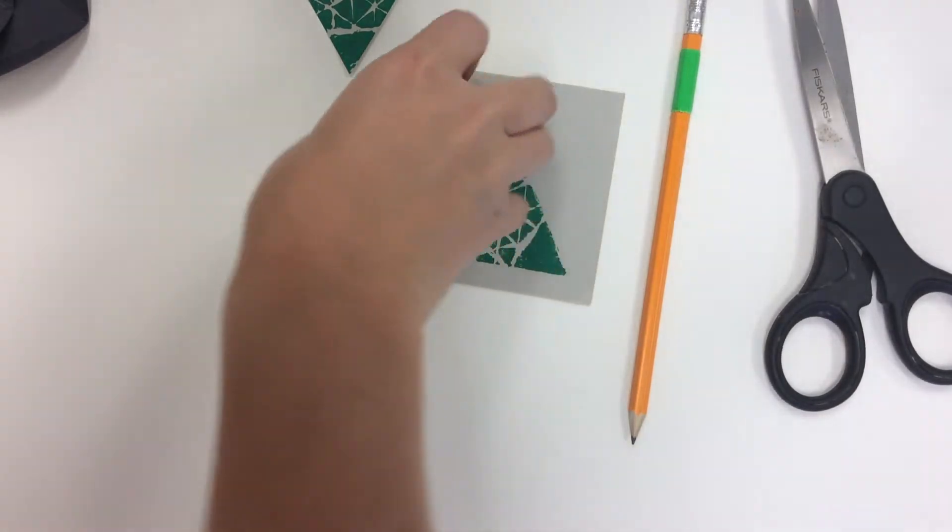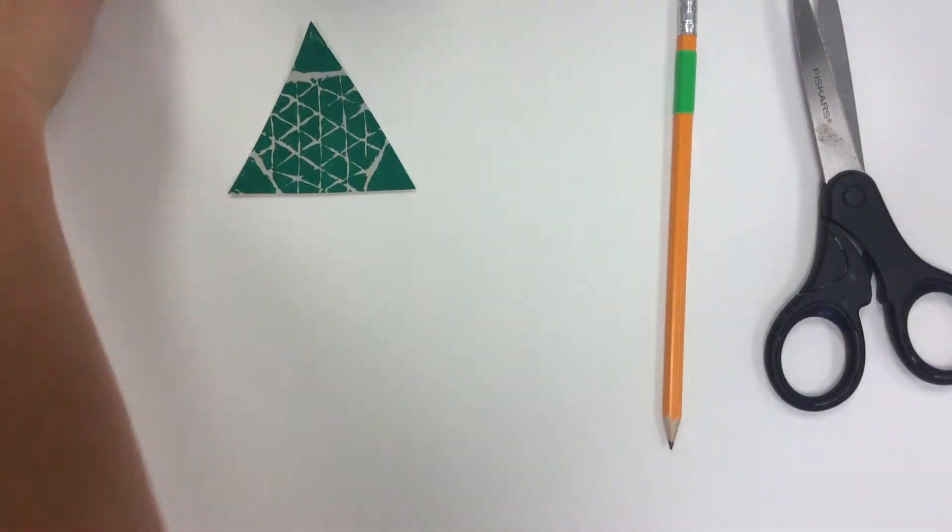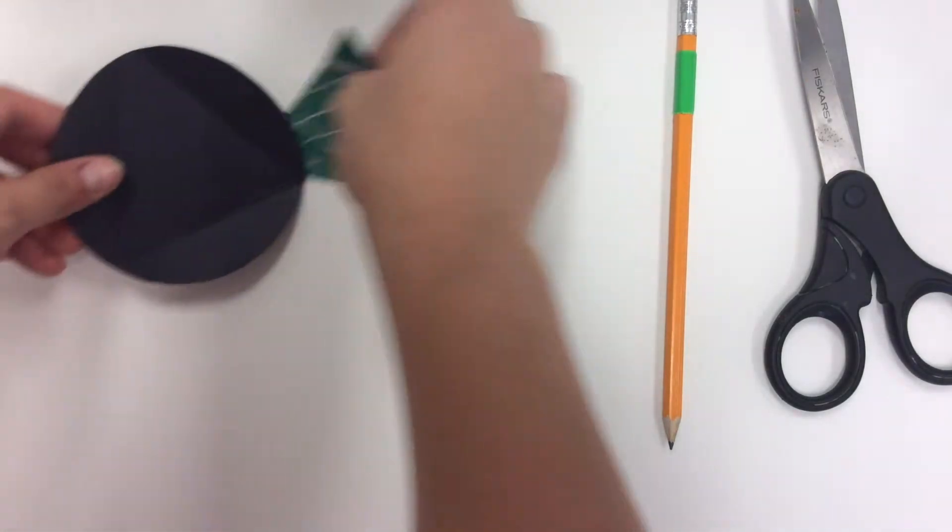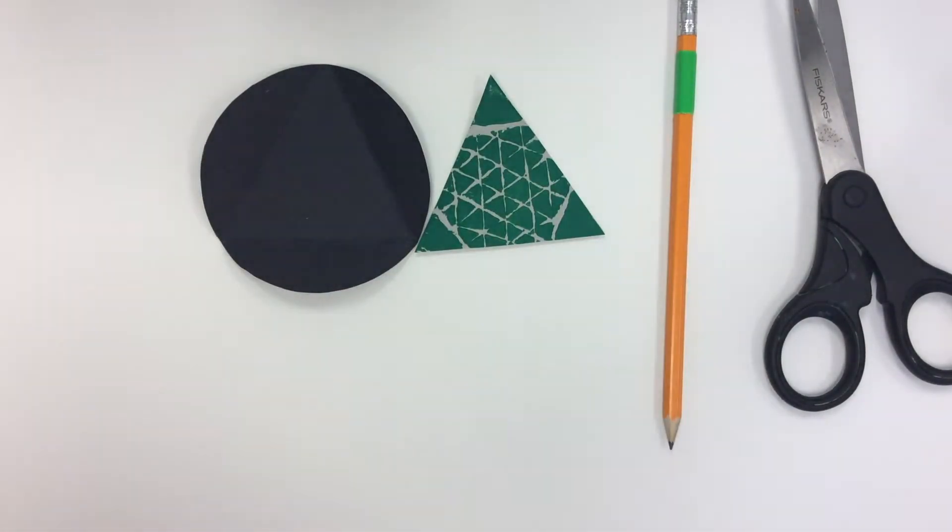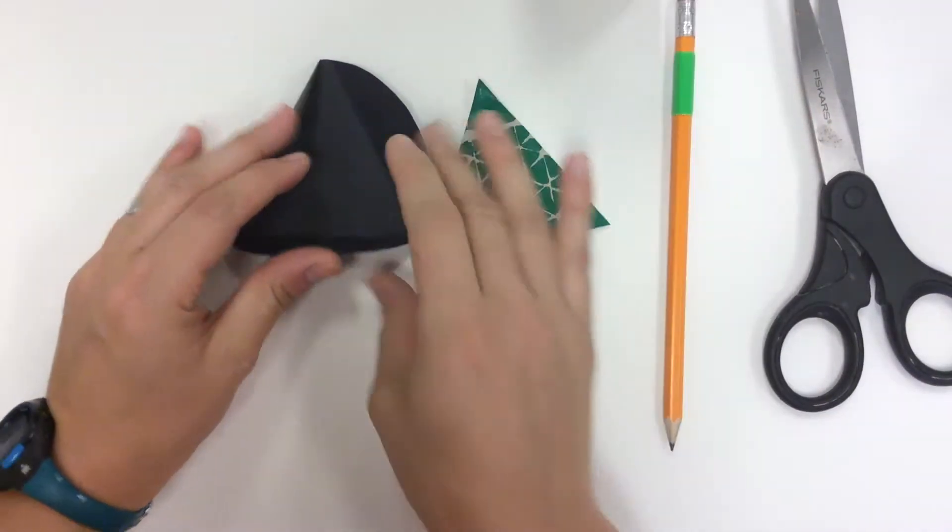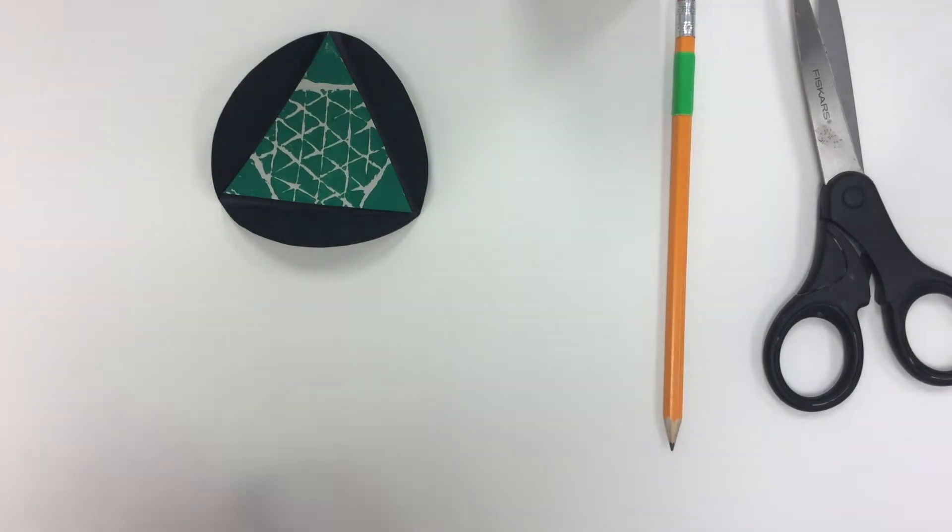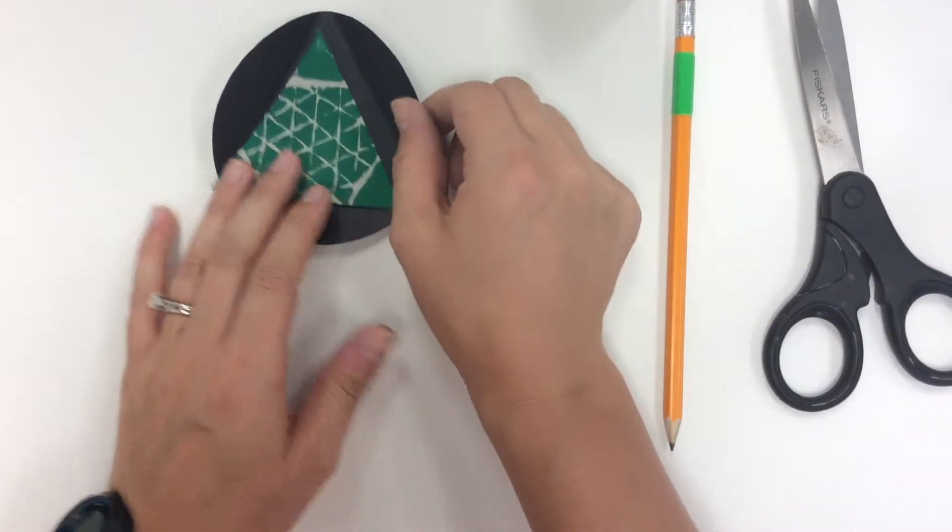Once you have your 20 best triangles cut out, next you're going to glue them into your folded circles. Things to keep in mind with your folded circles: you might test to see how it fits before you apply glue. This one fits well in this circle.